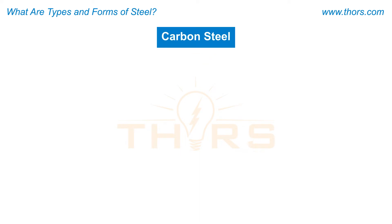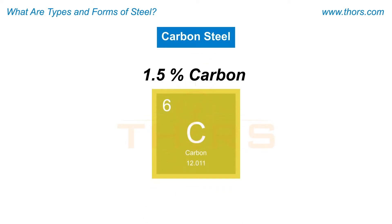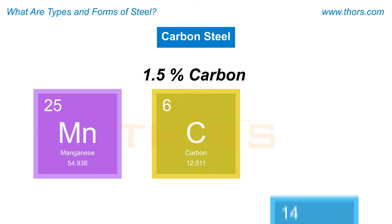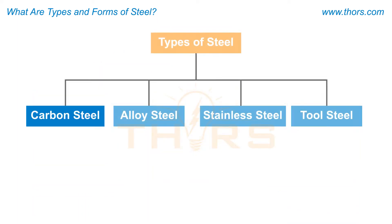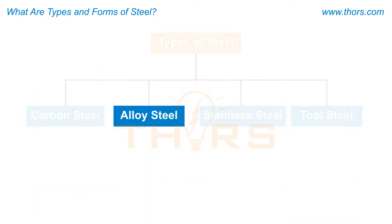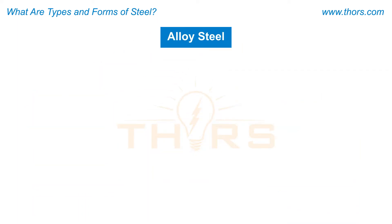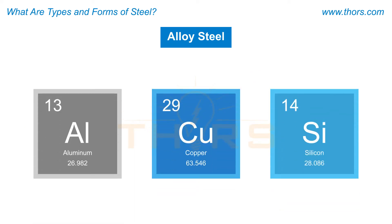Carbon steel contains up to 1.5% carbon, along with other common elements such as manganese and silicon. Alloy steel refers to steel that contains specified amounts of other alloying elements in addition to the defining alloying element of carbon.